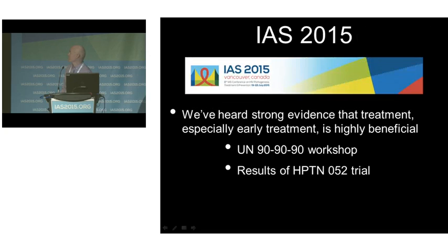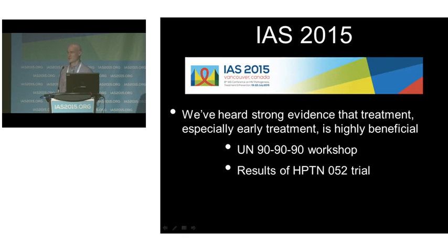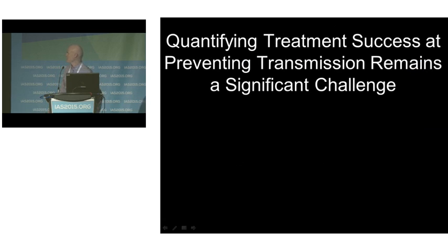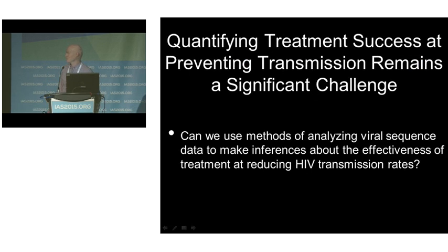However, quantifying treatment success at preventing transmission remains a significant challenge. Scientists like us like to think of different ways of quantifying that. And so we got to thinking: can we use methods of analyzing viral sequence data to make inferences about how effective treatment is at preventing the transmission of HIV? This would be a different, independent way of doing it relative to epidemiological approaches.